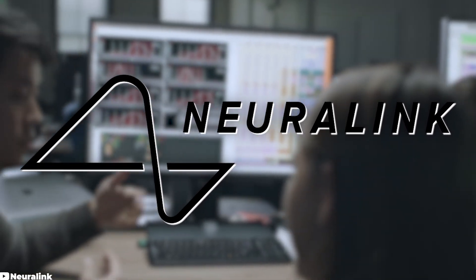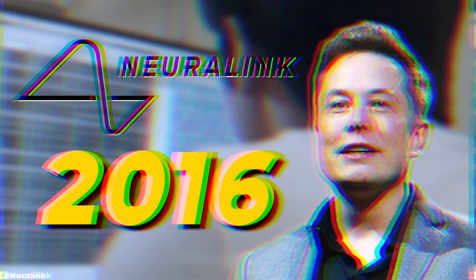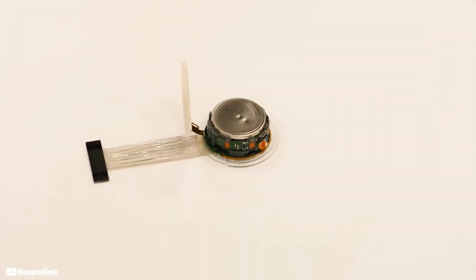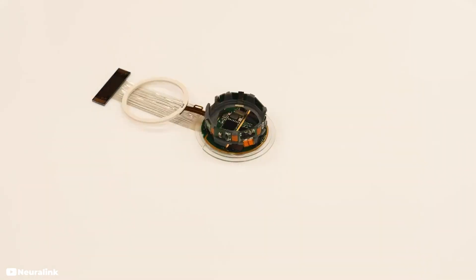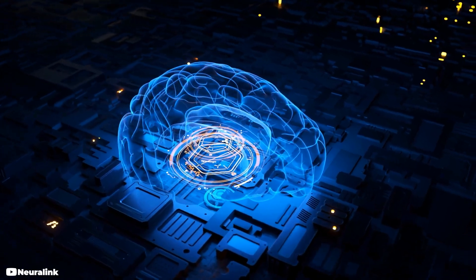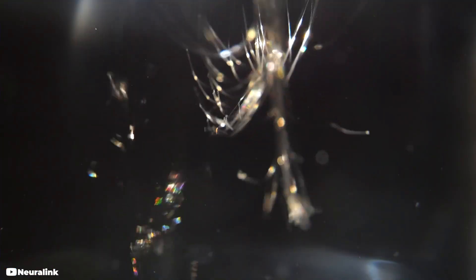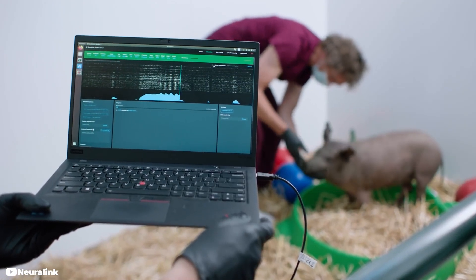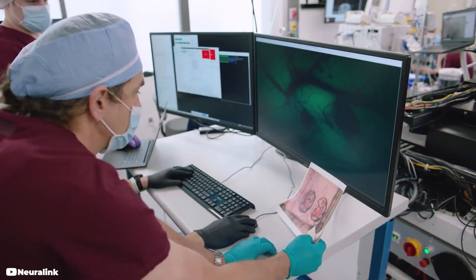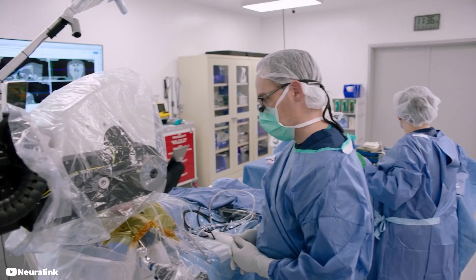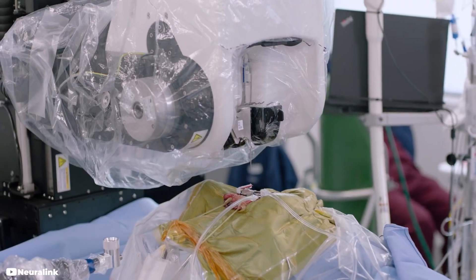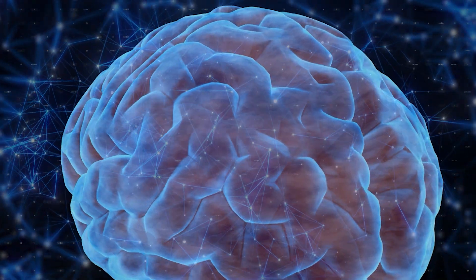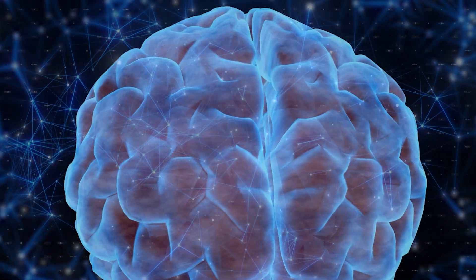Neuralink is a neurotechnology company founded by Elon Musk in 2016 to develop implantable brain-machine interfaces. The company aims to create devices that can be implanted in the human brain, allowing for a direct connection between the brain and a computer. The device uses tiny electrodes to connect the human brain to a computer, which can detect, record, and send electrical impulses. The electrodes are inserted into the brain using a surgical procedure that is carried out by a robot. The chip processes the signals from the electrodes and sends them wirelessly to a small computer worn behind the ear.